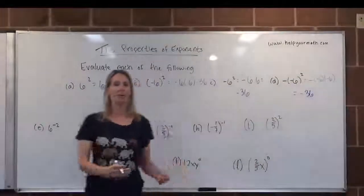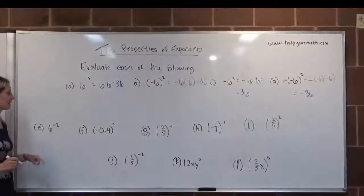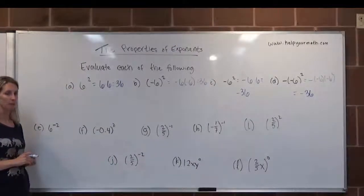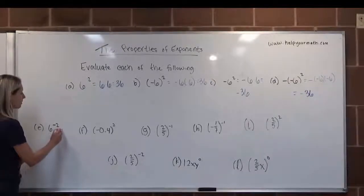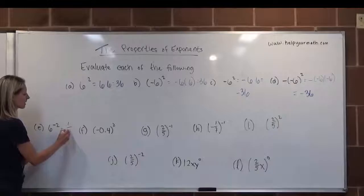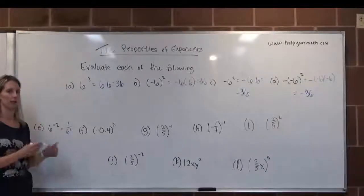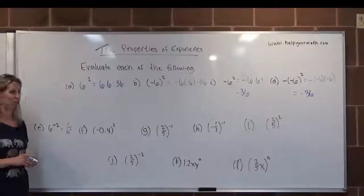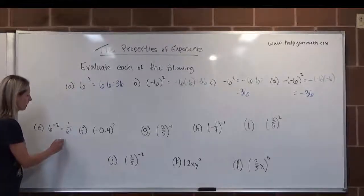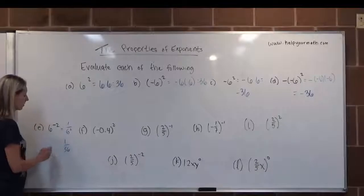In case you haven't had enough of base 6, we have 6 to the negative 2. That negative exponent indicates we're taking the reciprocal of the base. So we would rewrite this as 1 over 6 squared, or 1 over 6 quantity squared. This is probably going to be a little bit nicer to do, and then we can simplify 1 over 6 squared as 1 over 36.